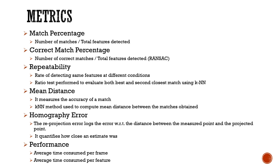The fourth metric is mean distance, which is a good metric to measure the accuracy of a match. The KNN method was used to compute the mean distance between the matches obtained. Distance for a vector descriptor would be Euclidean distance and for a binary descriptor would be Hamming distance. Smaller the mean distance, better is the performance of the algorithm.